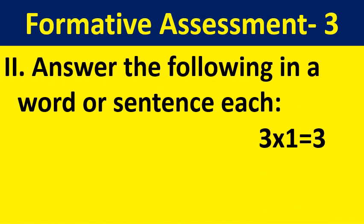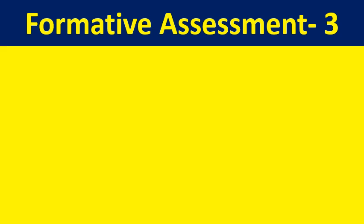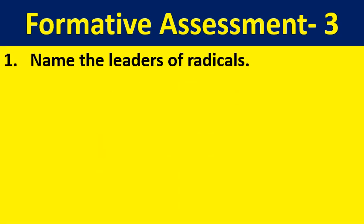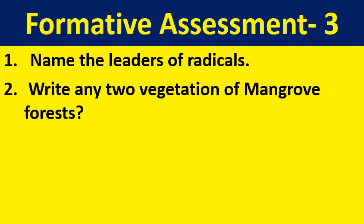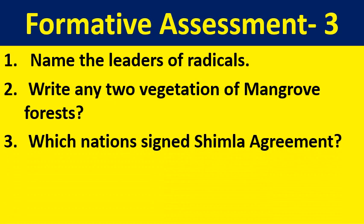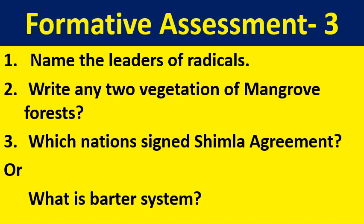Answer the following in a word or sentence each. 3 questions: 1. Name the leaders of radicals. 2. Write any 2 vegetation of mangrove forest. 3. Which nation signed the Shimla Agreement? Or: What is barter system? These are the questions you need to answer for 3 marks. The third question has an option.